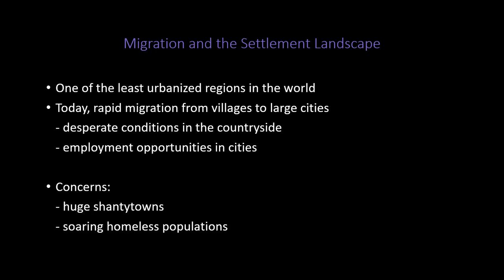This is one of the least urbanized regions in the world with about 30% urbanized. However, today we are seeing rapid migration from compact rural villages to large cities. A big part of this is that changing agricultural systems have resulted in fewer agricultural jobs, pushing people to move to cities for different opportunities. This brings about a whole new set of problems — the main concerns being shantytowns or informal settlements, slums, and soaring homeless populations within urban areas.